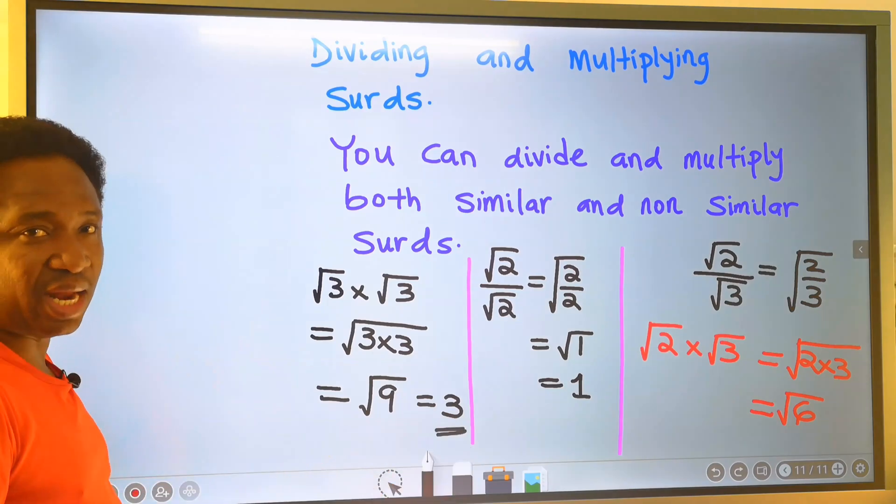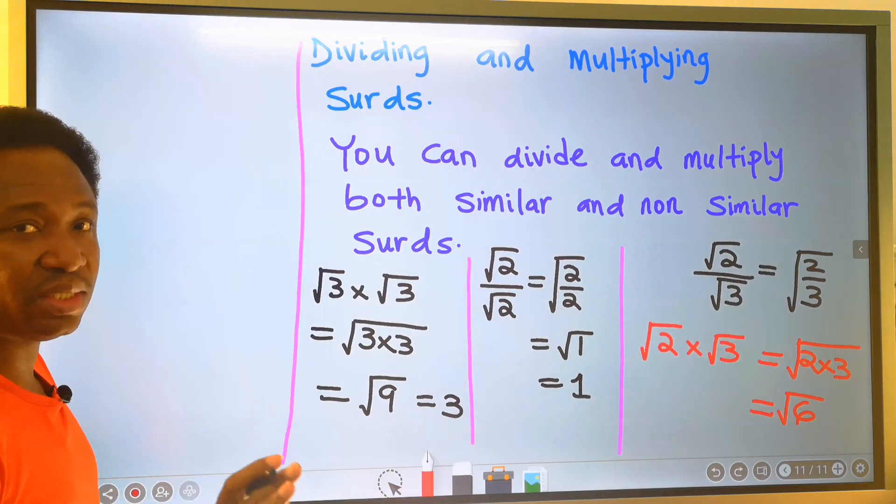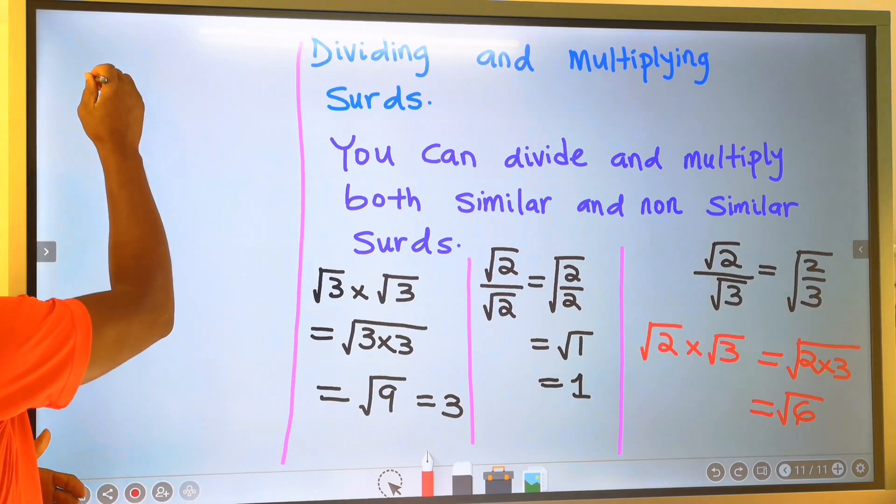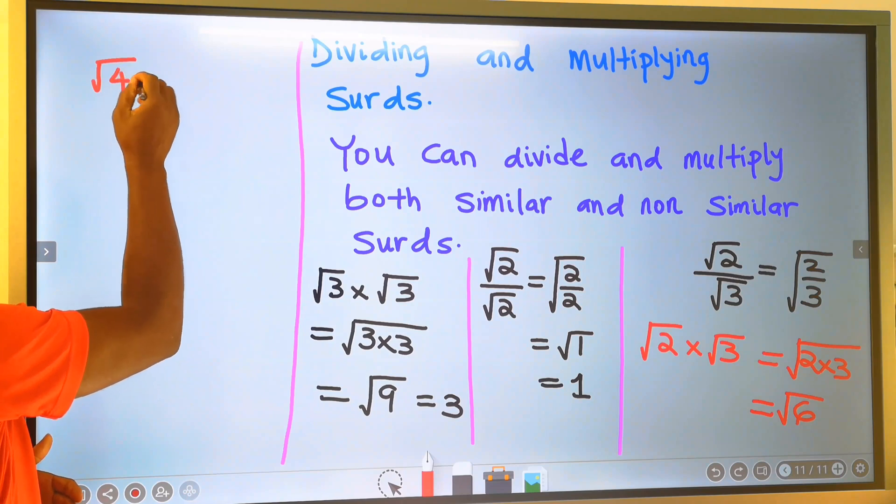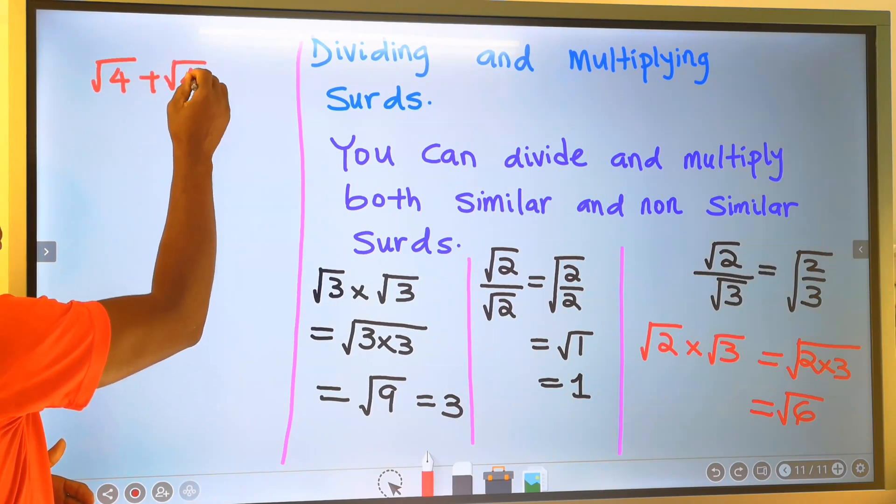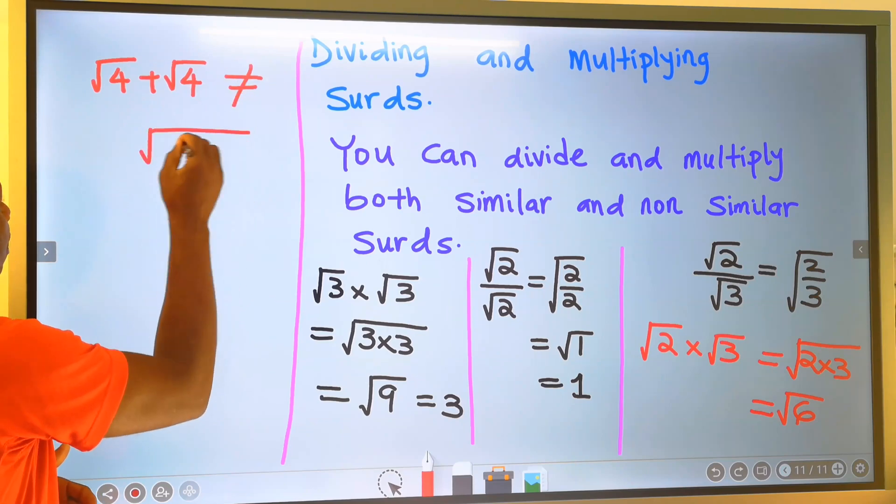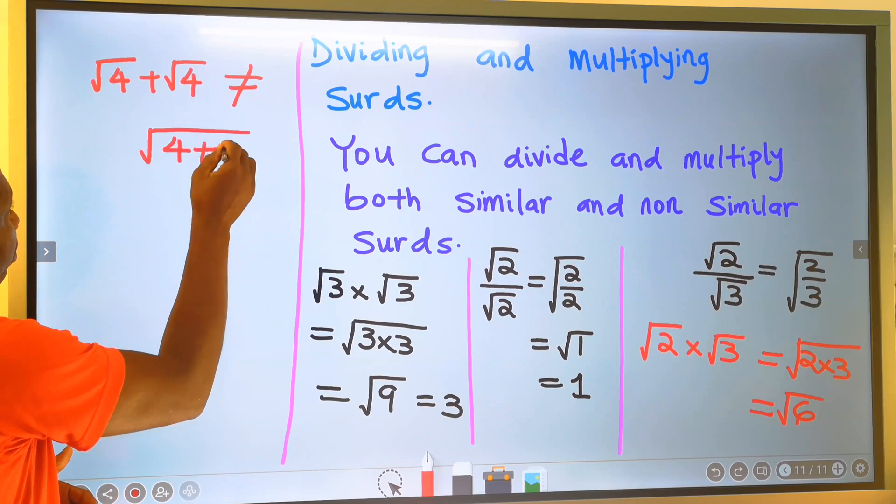This is allowed. It is important to mention here that the square root of 4, for example, plus the square root of 4 is not equal to the square root of 4 plus 4.